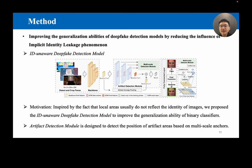Based on the understanding of the implicit identity leakage, we further propose a simple yet effective method termed as the ID-Unaware DeepFake Detection Model to improve the generalization abilities of binary classifiers. Our motivation is that local areas usually do not reflect the identity of images. To this end, we designed the artifact detection module to detect the position of artifact areas based on multiscale anchors, so as to pay less attention to the global identity. By preventing our model from learning the global ID representation of images, the influence of implicit identity leakage can be reduced.